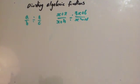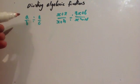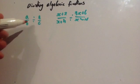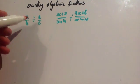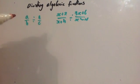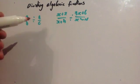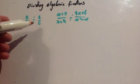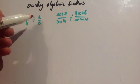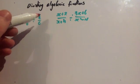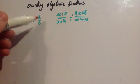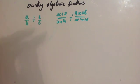In this video we're going to be looking at dividing algebraic fractions. So, A over B divided by A over C. What you're going to do is remember how to divide fractions from GCSE. You keep the first fraction as it is, you change the divide sign to a multiplication sign, and you take the reciprocal of the second fraction — remember, flip it over.